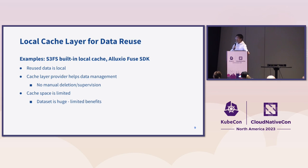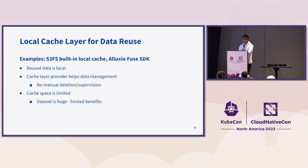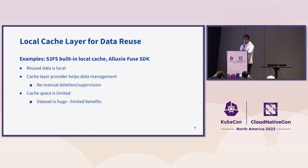For a local cache layer for data reuse, some examples include S3FS built-in local cache and Alluxio FUSE SDK. Reused data is local as well because after you read it the first time, that part of data is now cached locally. This local cache system can help with data management so you don't have to do manual deletion. But the same problem is that cache space is limited.